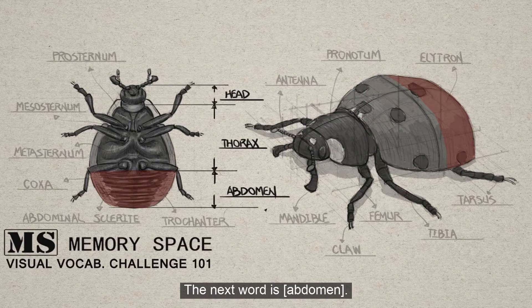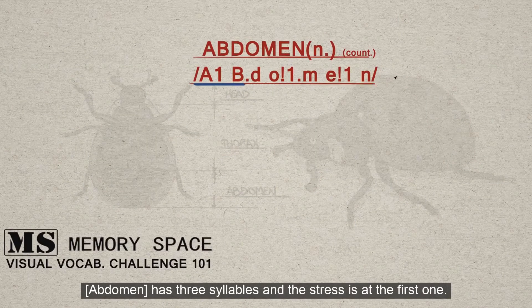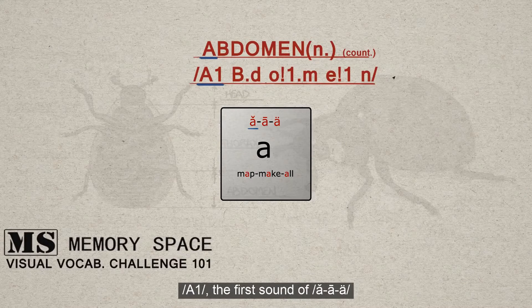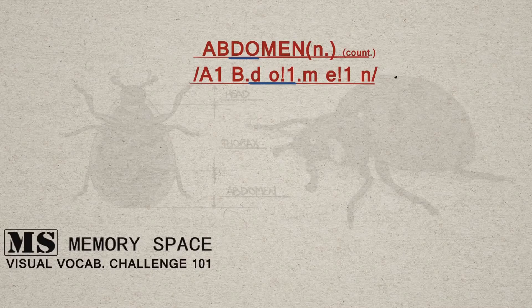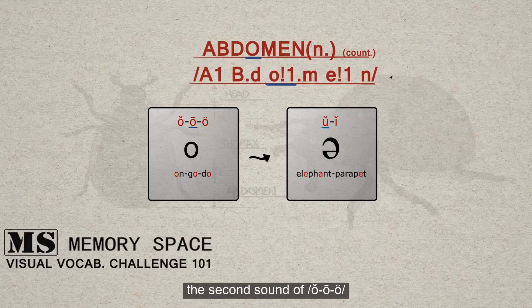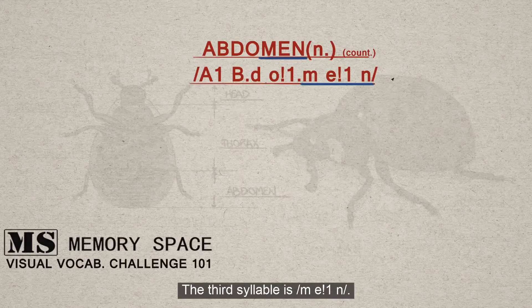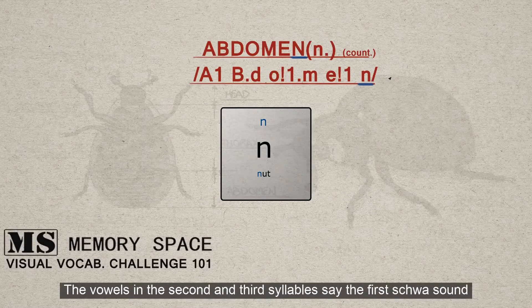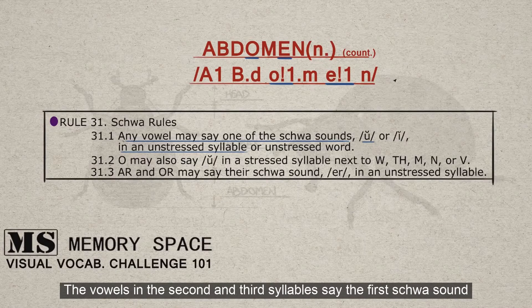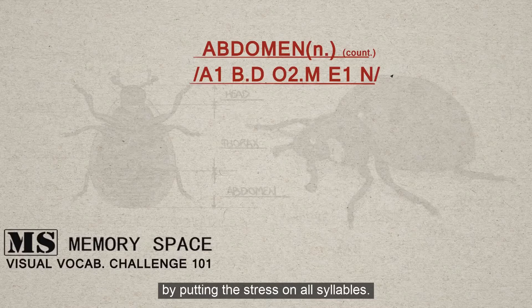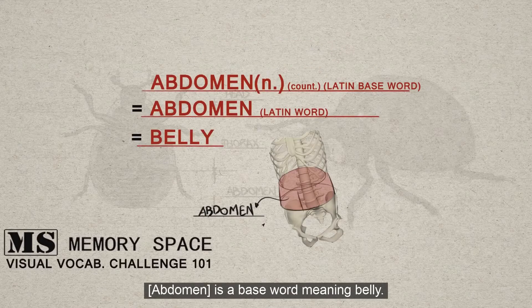The next word is abdomen. Abdomen has three syllables and the stress is at the first one. The first syllable is 'ab' — A, the first sound of A. The second syllable is 'do' — schwa sound reduced from O. The third syllable is 'men' — schwa sound reduced from A. The vowels in the second and third syllables are schwa sounds because they are in unstressed syllables. We say ab-dom-en for spelling purposes by putting stress on all syllables. Abdomen is a base word meaning belly.